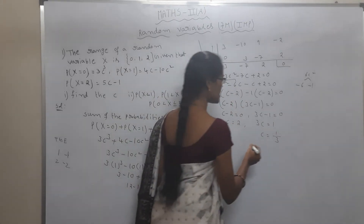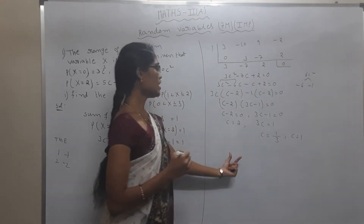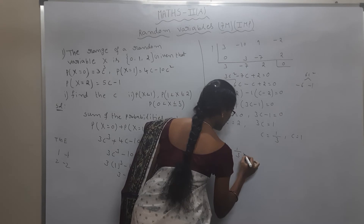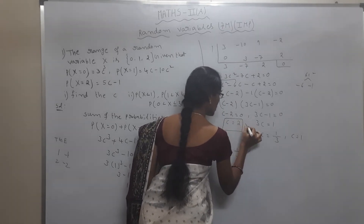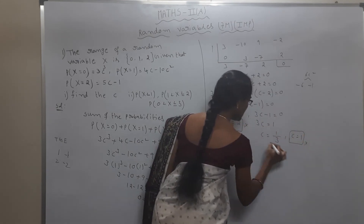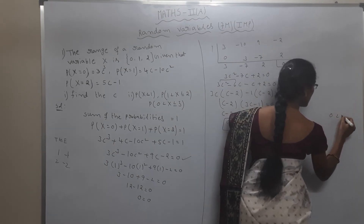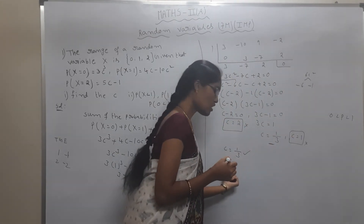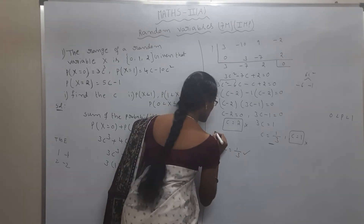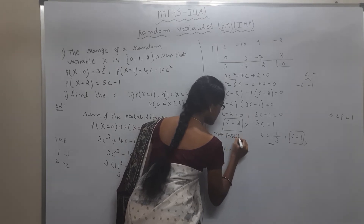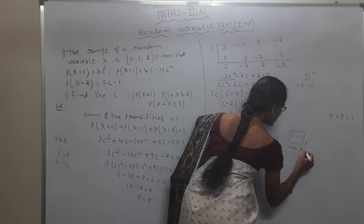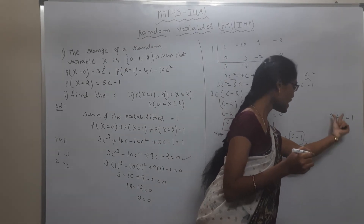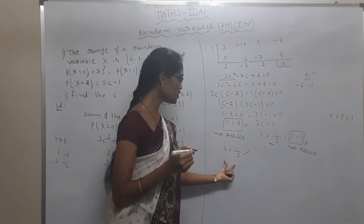We have three values: c = 1, c = 2, and c = 1/3. Since probability must always satisfy 0 ≤ P ≤ 1, c = 2 and c = 1 are not valid. Therefore, c = 1/3 is the correct answer.